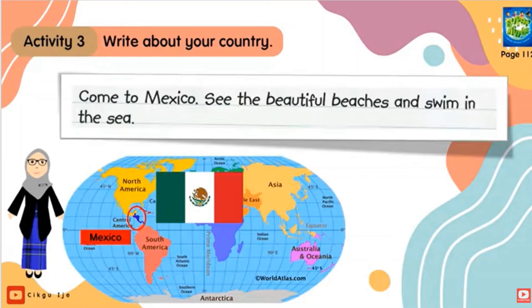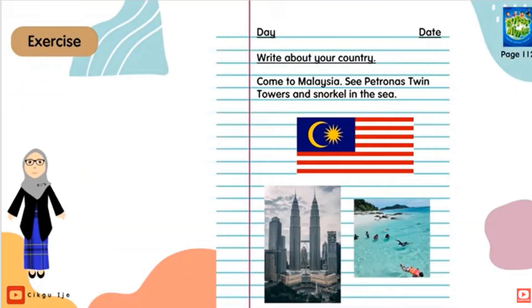So your task is to write in your exercise book — open your E1 now. Write about your country, like the example Madam T gave. For example: Come to Malaysia, see Petronas Twin Towers and Batu Caves. What else can you add?